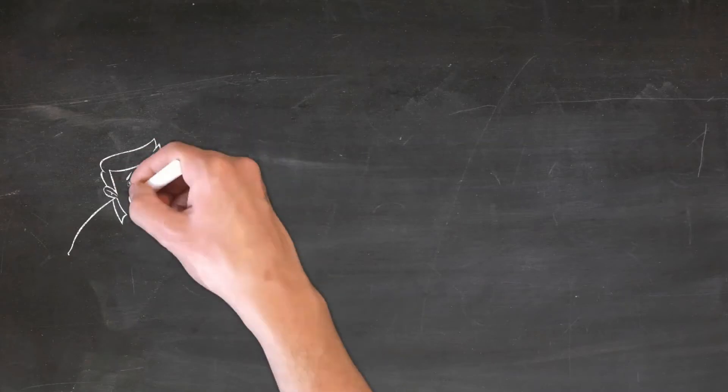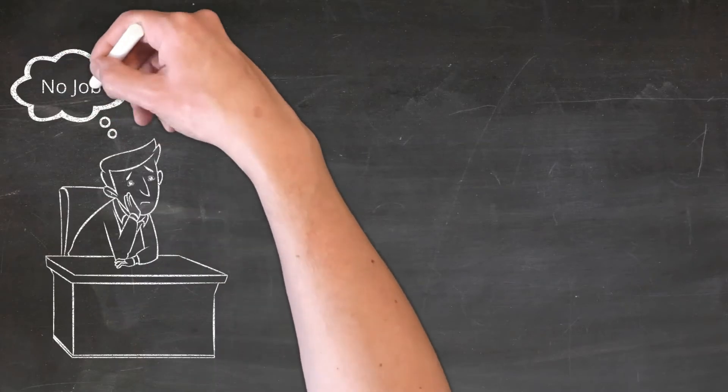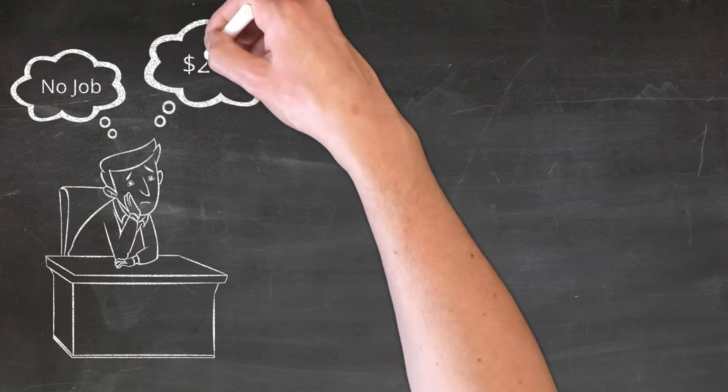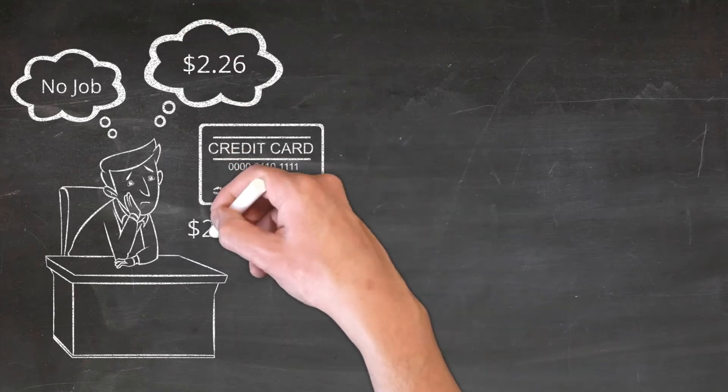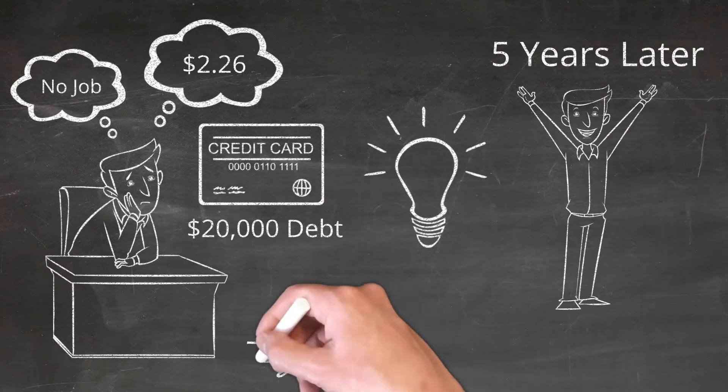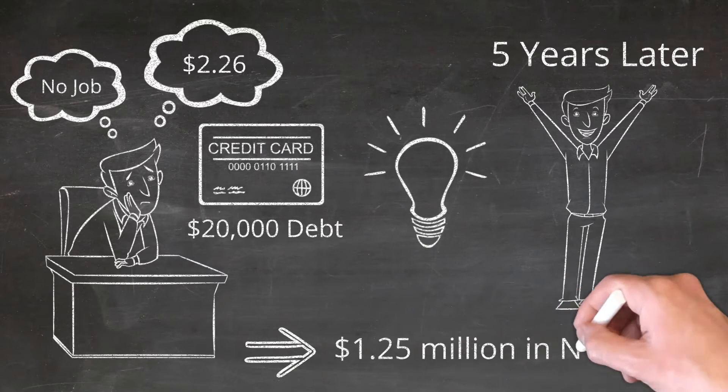When Sabatier was 24, he was out of work, living with his parents, depressed, and had a grand sum of $2.26 in his bank account plus $20,000 in credit card debt. Fast forward five years later and he had amassed a cool $1.25 million in net worth.